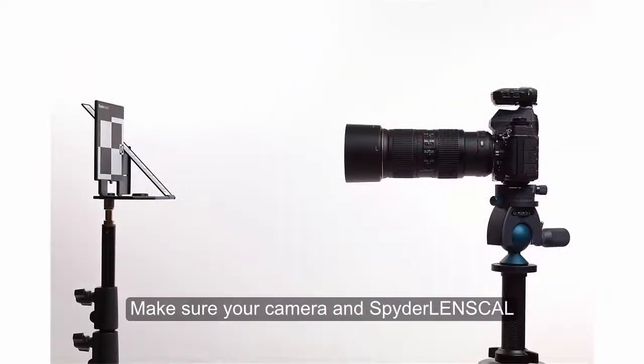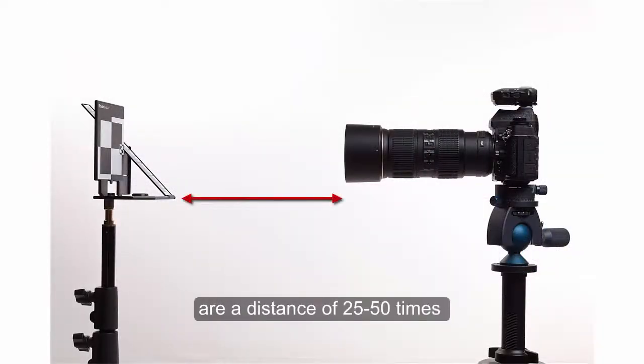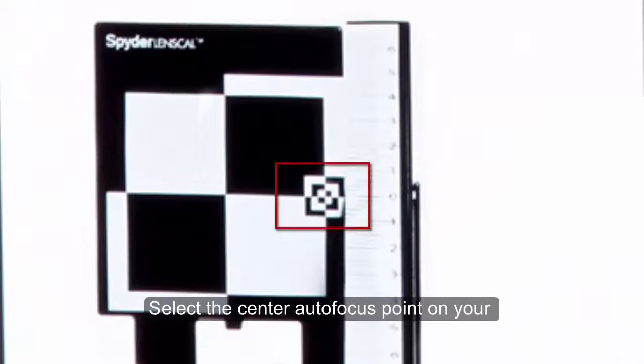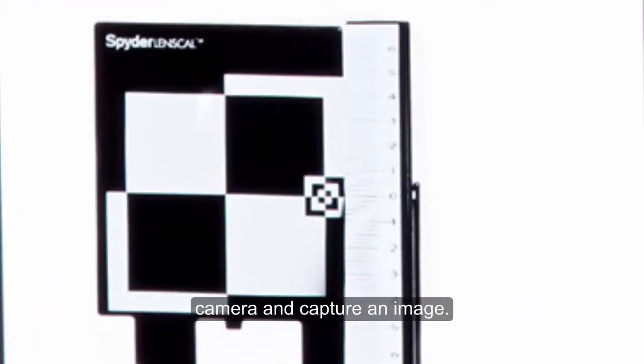Make sure your camera and Spider Lens Cal are a distance of 25 to 50 times the focal length apart. Now, aim your lens at the center of the target. Select the center autofocus point on your camera and capture an image.